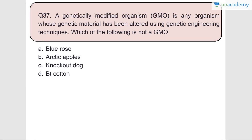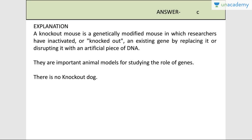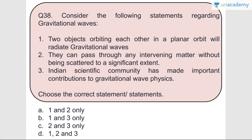Question number thirty-seven: A genetically modified organism is one whose genetic material has been altered using genetic engineering techniques. Which of the following is not a GMO? Blue rose is a GMO, Arctic apple is a GMO, Bt cotton is a GMO, but there is no knockout dog. Answer is C. A knockout mouse is used - it is a genetically modified mouse where an existing gene is knocked out by replacing or disrupting it with an artificial piece of DNA. These are important animal models for studying the role of genes. There is no knockout dog.